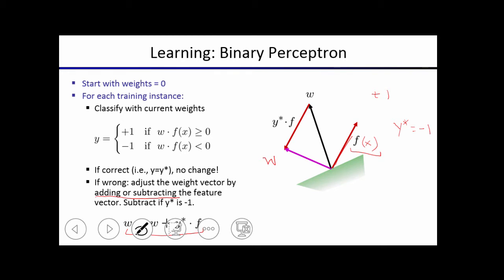So the new, let's call this w prime. So w prime will equal w plus y star times f. And if you try and make a new classification with this new weight vector, you'll see that it's actually more likely to be correct on your data. It might not necessarily be exactly correct after only one update.